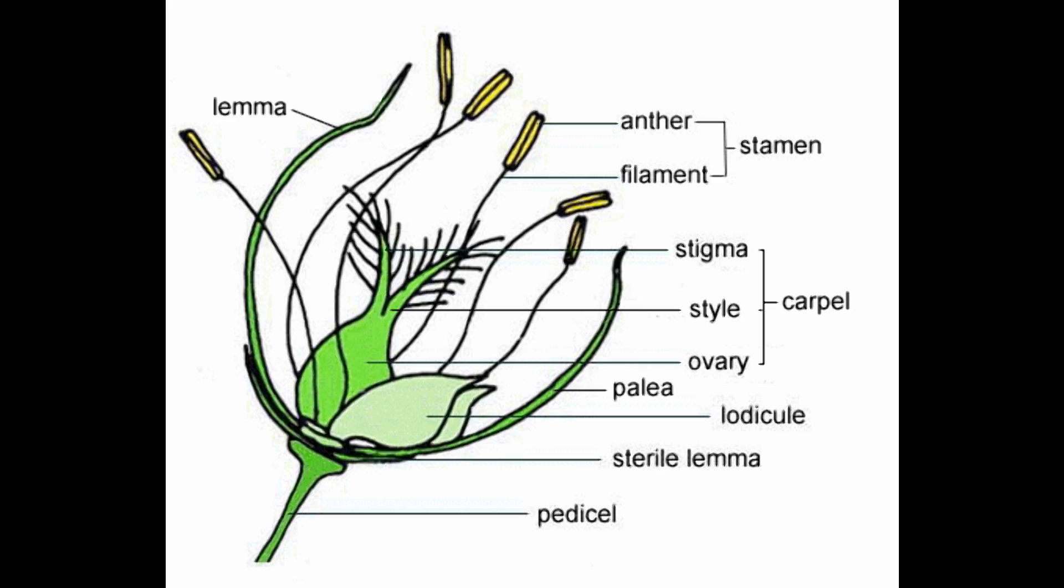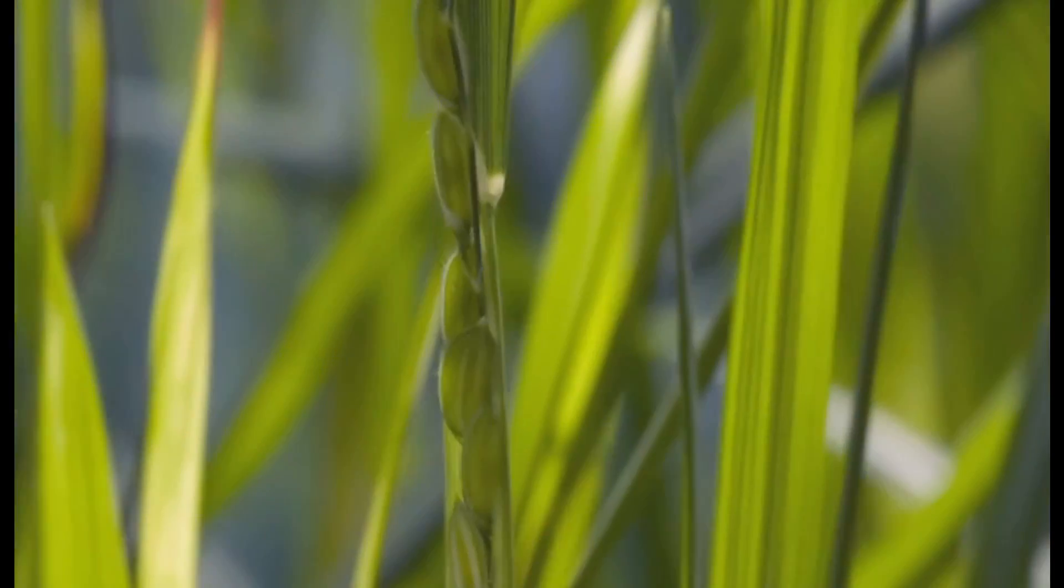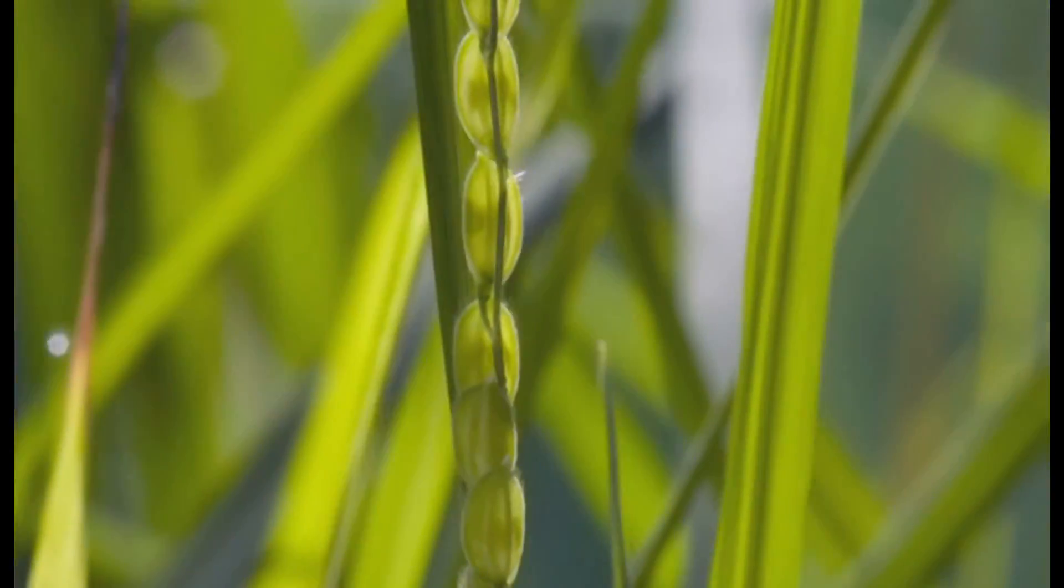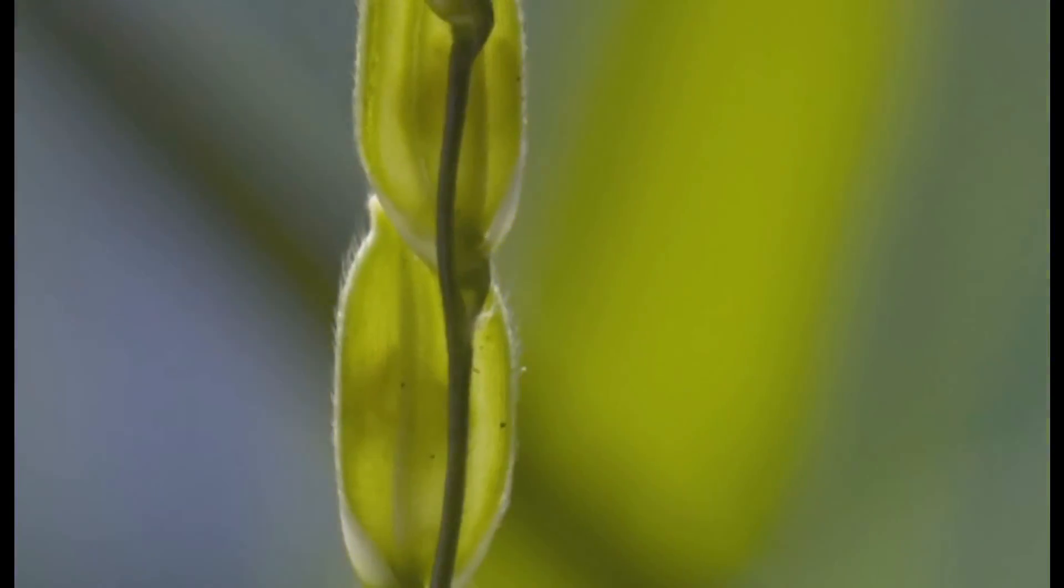Section of Rice Reproductive Parts. For this section, the rice plants are collected from wetland. Here, the individual rice flower is known as a spikelet.